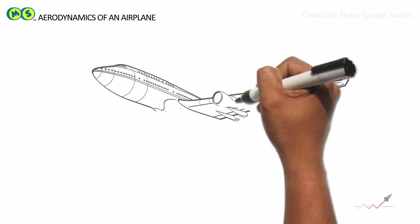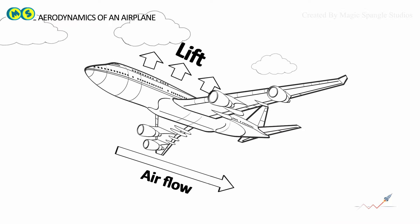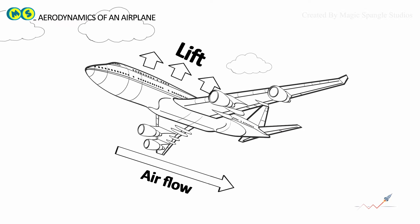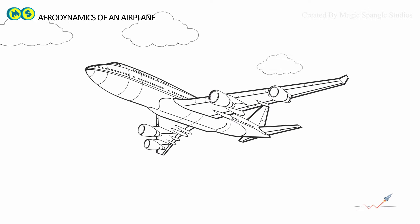Lift overcomes the weight and holds the airplane in the air. Lift is created mostly by wings to keep the plane aloft. So, to keep the airplane moving, flying straight, and level, this must be true.